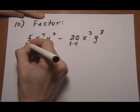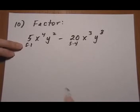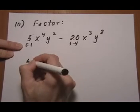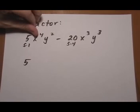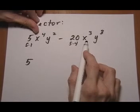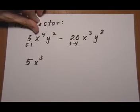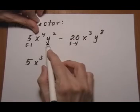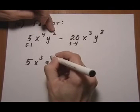We want to pull out the common factors. We think of the 5 as 5 times 1, so the common numeric factor is 5. Now the variables — starting with x: one term has x to the 4th, the other has x cubed. The most we have in common is 3, so we pull out x cubed. For the y's: one term has 2 y's, the other has 3. The most we can pull out is 2, so we pull out y squared.